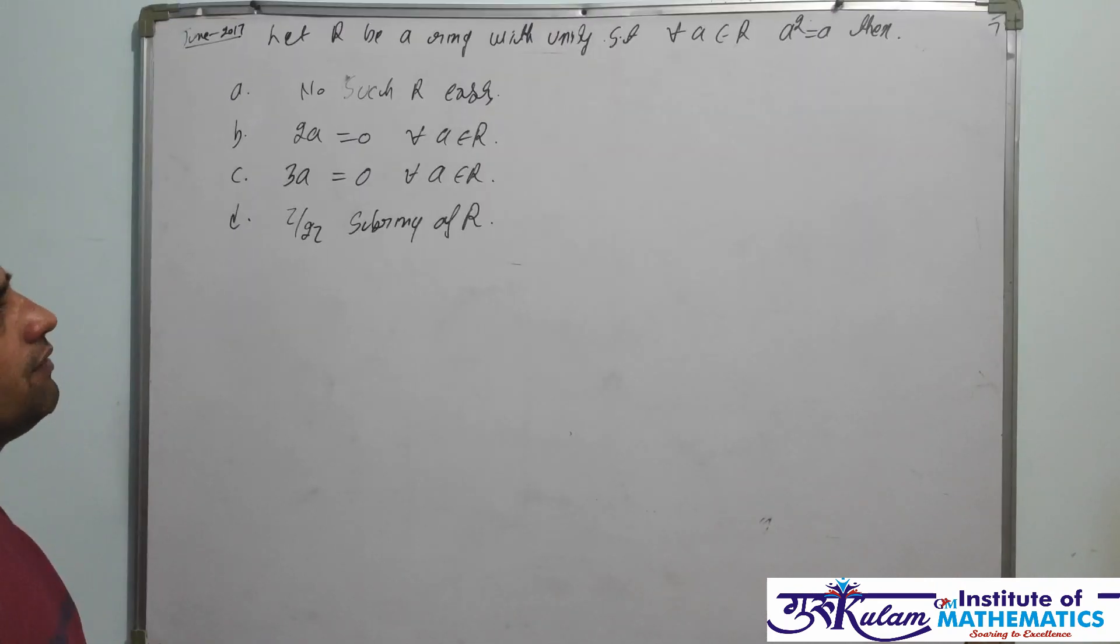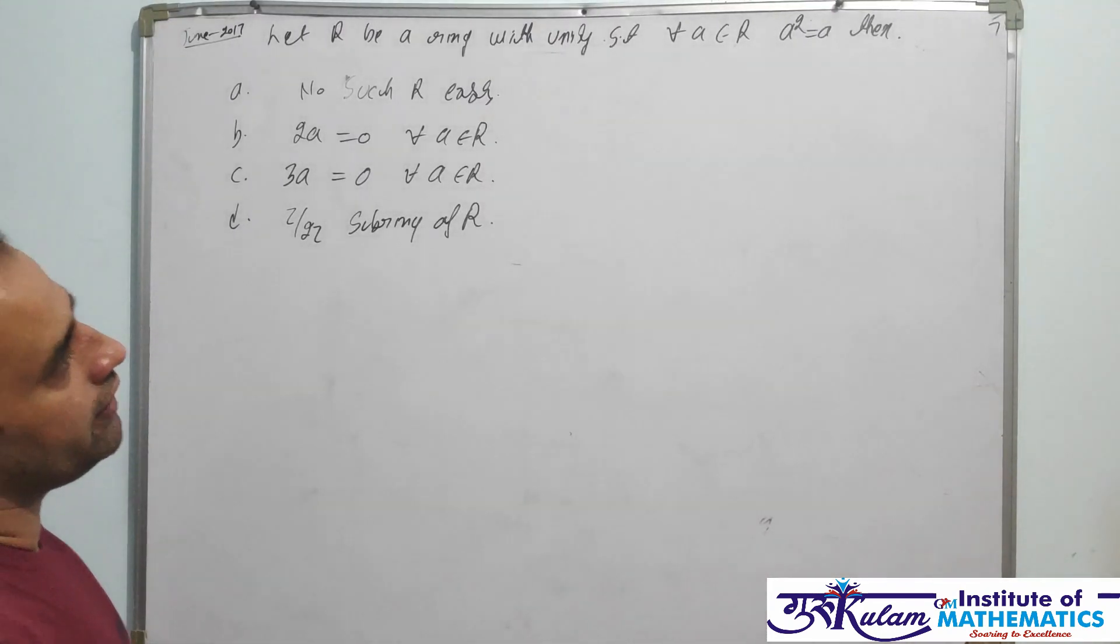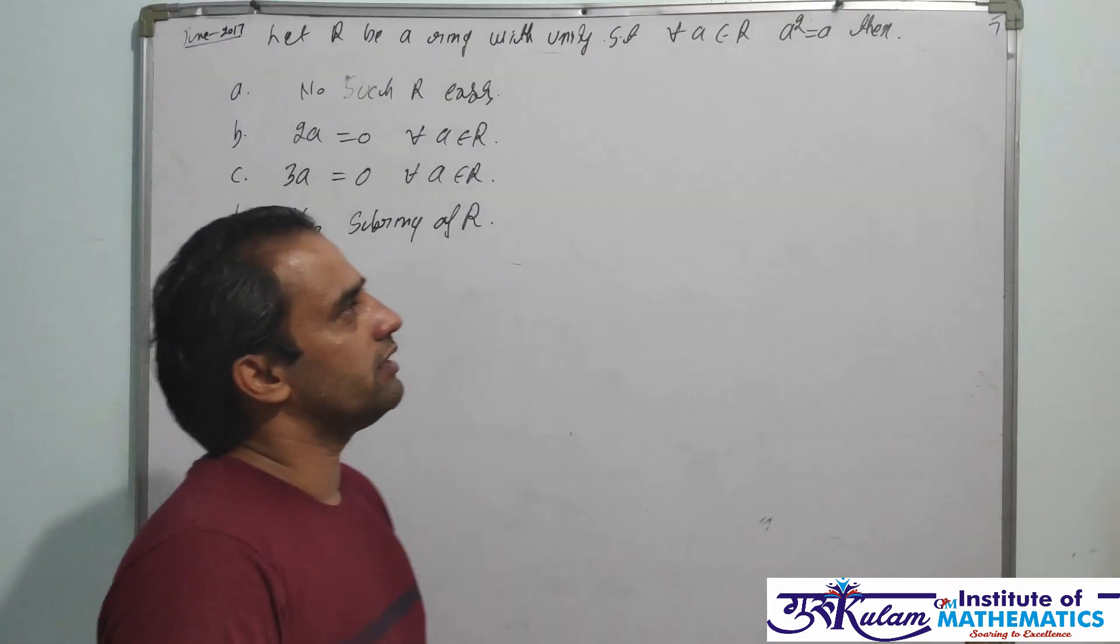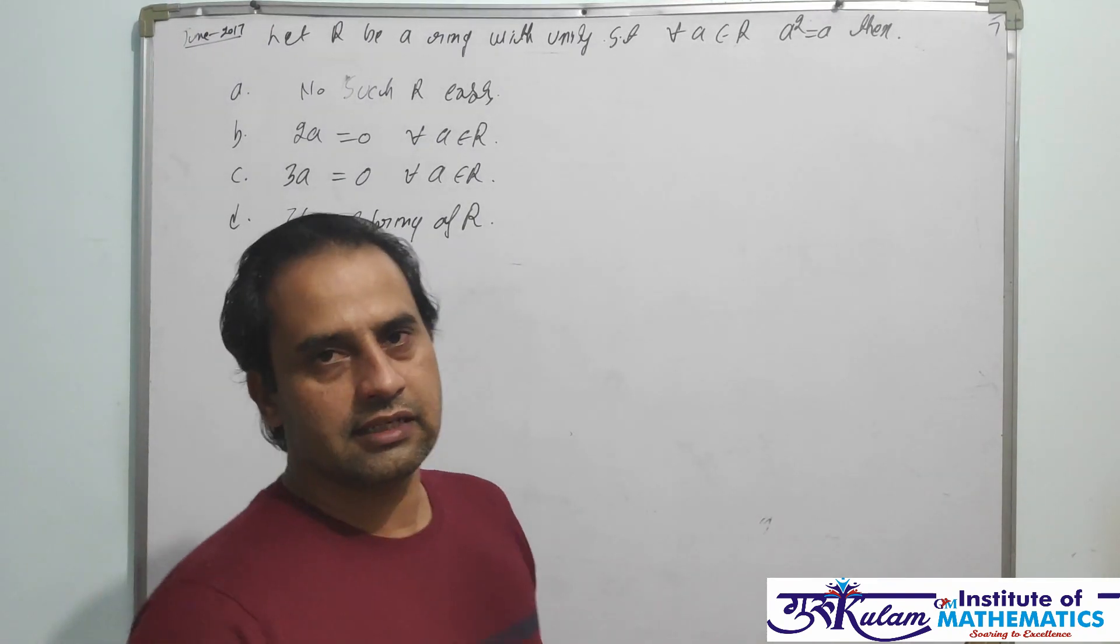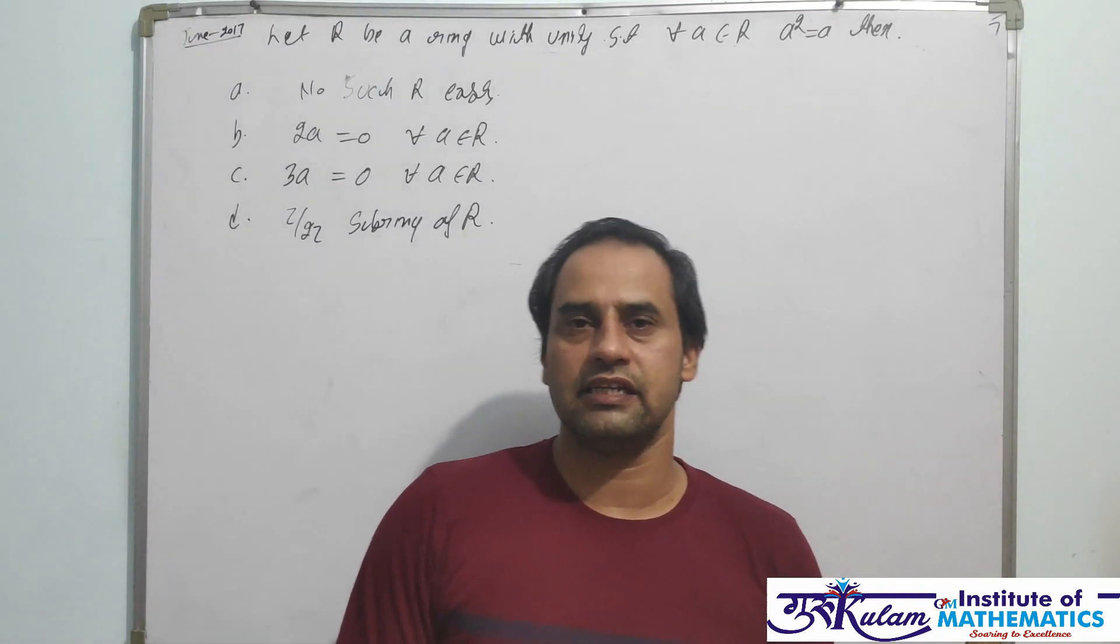The question is: R is a ring with unity such that for every A belongs to R, A² = A. That is, R is a ring with unity and every element is idempotent.